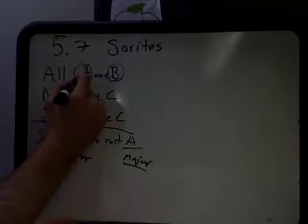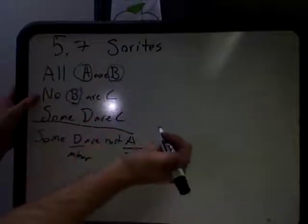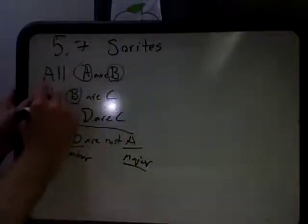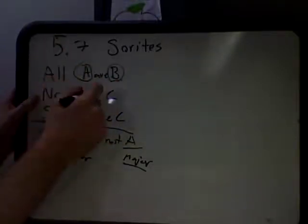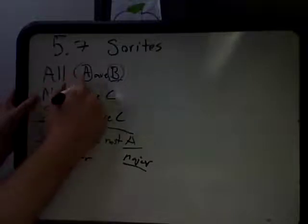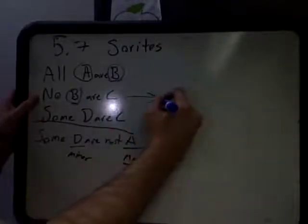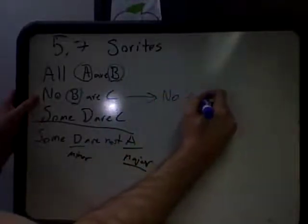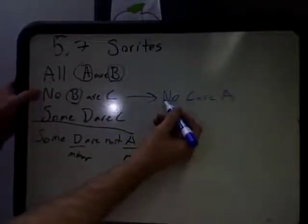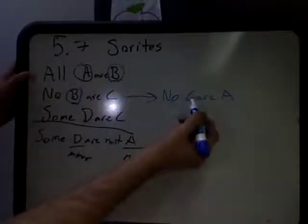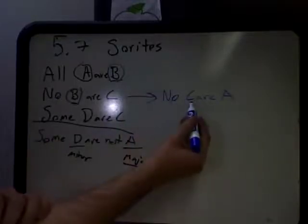The question is: what can we conclude from that? We have a middle term, and whatever we conclude — you can think about your four rules — it has to have a negative premise and it can't be a particular conclusion. So we're probably going to conclude No C or A, because we can't use B again. We'll draw a line and go No C or A. We know to put a negative conclusion because if we have one negative premise, we must have a negative conclusion. And since C is in the second line, it has to be the subject term. So we have No C or A.